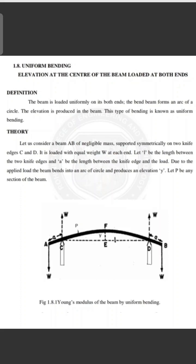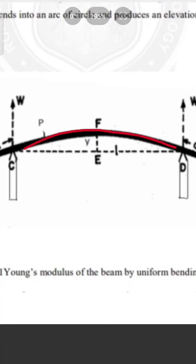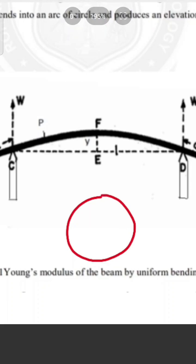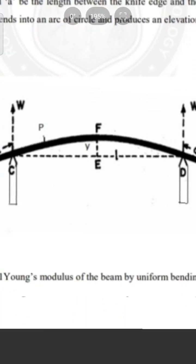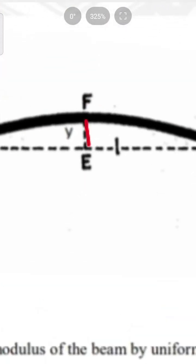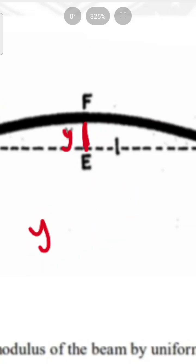The bent beam forms an arc of a circle. The elevation is produced in the beam. This type of bending is known as uniform bending. If we load the two sides, the height — that is the elevation — changes. This height is the same as the arc length along the circle.